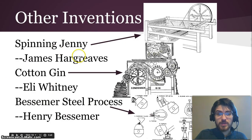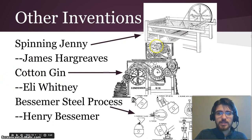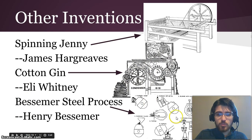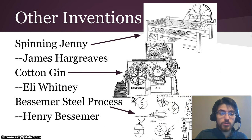Here are some other inventions. The spinning jenny was invented by James Hargreaves and is used to spin wool quickly into thread that you can use to make clothes, with few people working on it. The cotton gin is an easier way to get the seeds out of cotton so that you can make it into thread and have very quickly produced cotton. Henry Bessemer invented the steel process, where he made really high-quality steel by using air injection and a number of other techniques to create steel in ways that hadn't been done before, using the iron and coal from the Industrial Revolution.